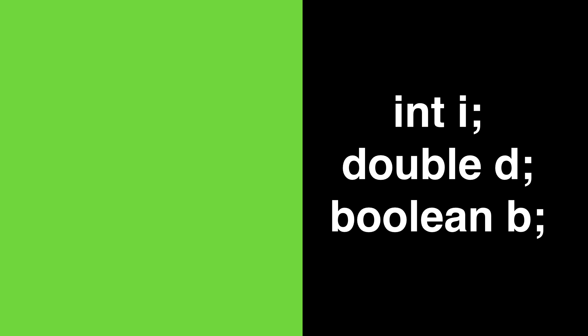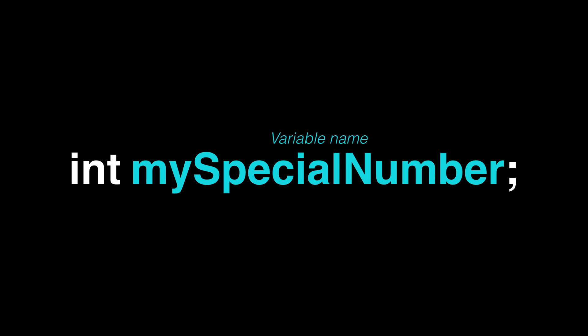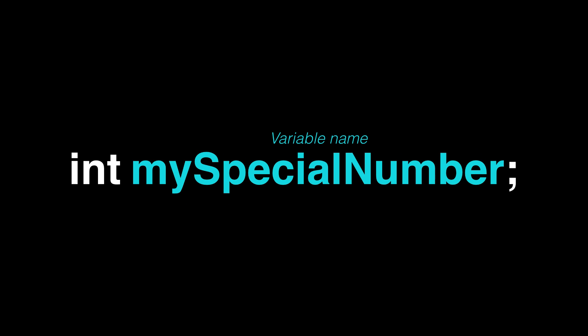Here we have an integer named i, a double variable named d, and a boolean variable named b. The first part of any variable declaration is the type — in this case, int is the type. The name of the symbol is for the variable. Now, i is not a very good name. You'll want to give your variables a descriptive name so it's clear what the value represents. Most IDEs will auto-complete your variable names, so you're not saving any typing by using short names. So my i variable here really probably should be something like count of widgets, number of days, or my special number — just something that's clear and obvious to you.